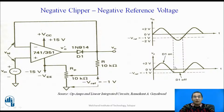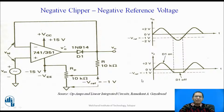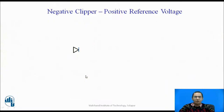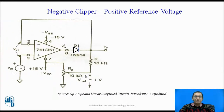This is called a negative clipper because, if you look at the output waveform carefully, the part of the output waveform towards the negative is chopped off. Now let us have a look at the second circuit, which is again a negative clipper, but instead of a negative reference voltage, let us see what happens when we apply a positive reference voltage — that is a negative clipper with a positive reference voltage.